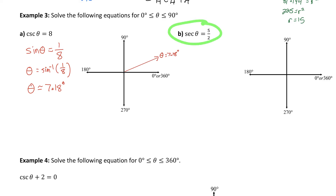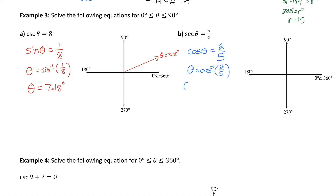For part B, secant of some angle equals 5 over 2. If the secant ratio is 5 over 2, then cosine — the reciprocal of secant — would be the flip of 5 over 2, which is 2 over 5. We then find the angle by doing inverse cosine of 2 over 5, which gives about 66.42 degrees, once again in quadrant 1.